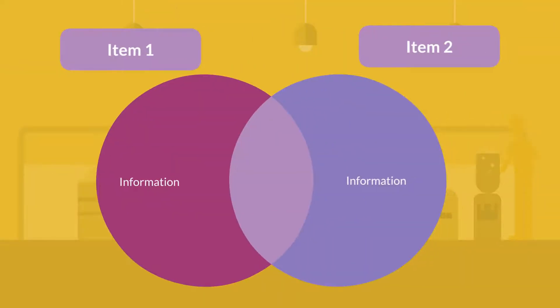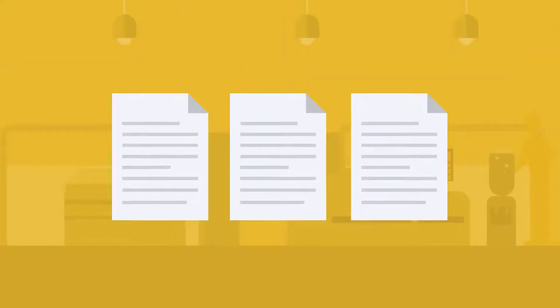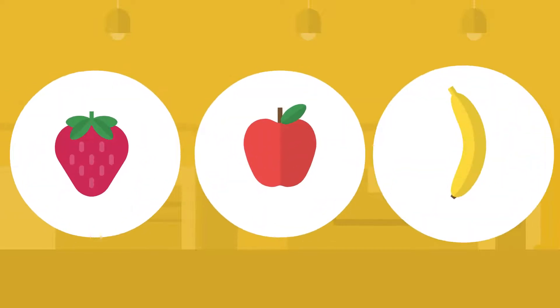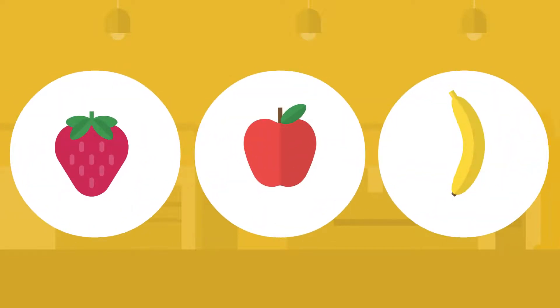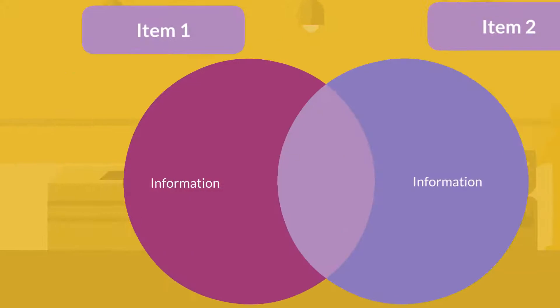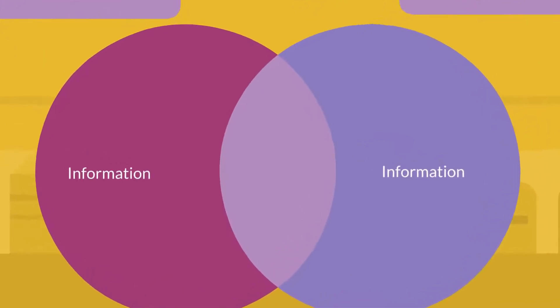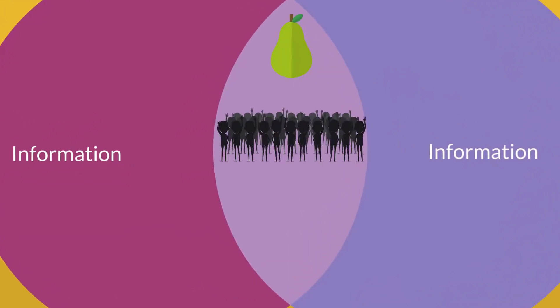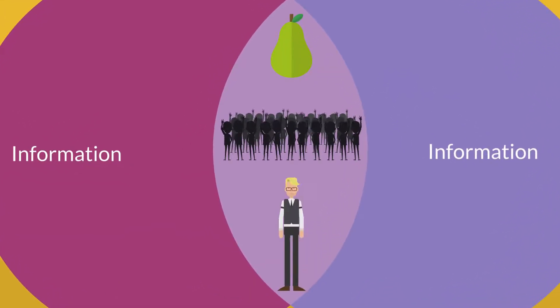A Venn diagram helps to organize information visually so you are able to see the relationships between two or three sets of items. It uses overlapping circles to compare objects, events, or people.